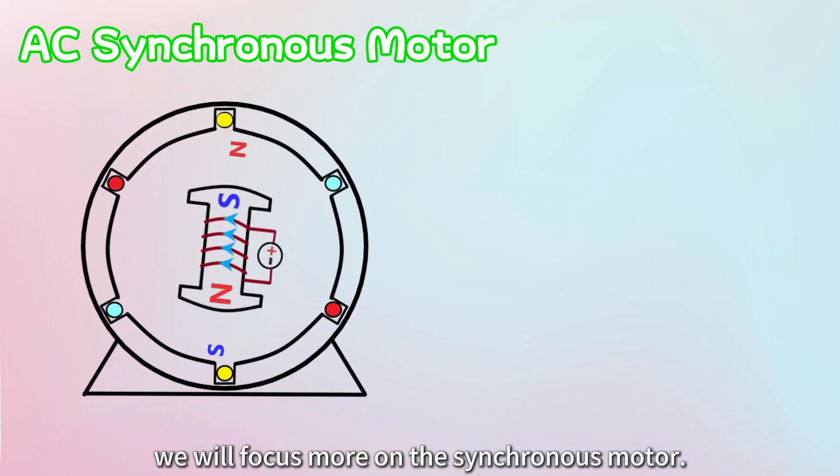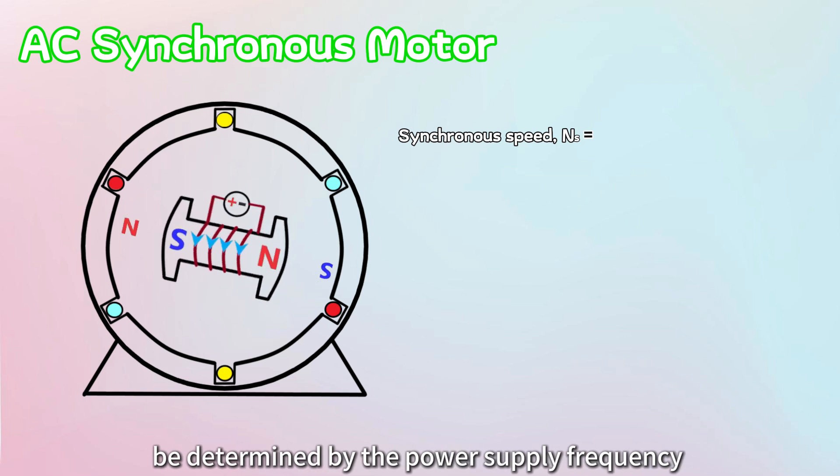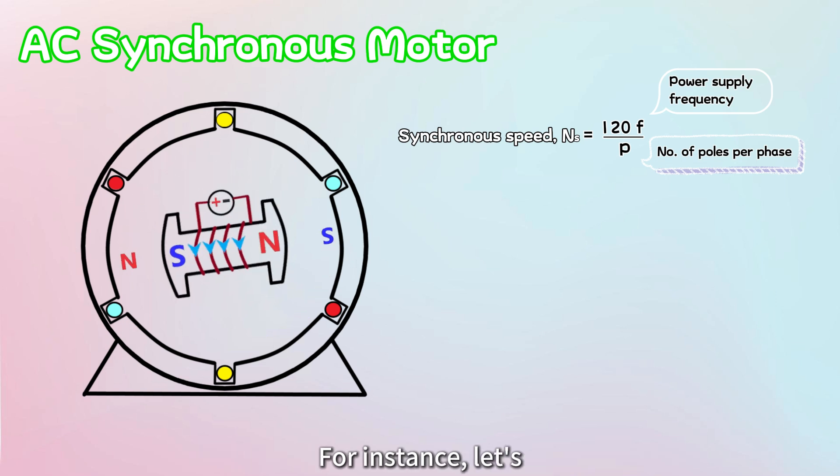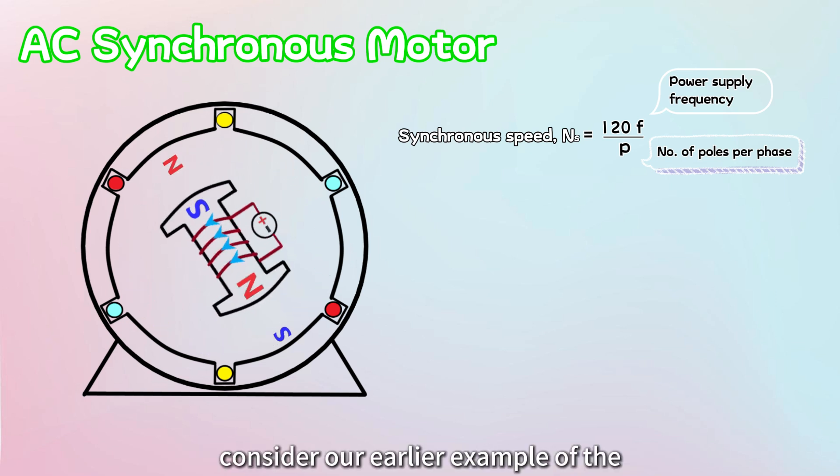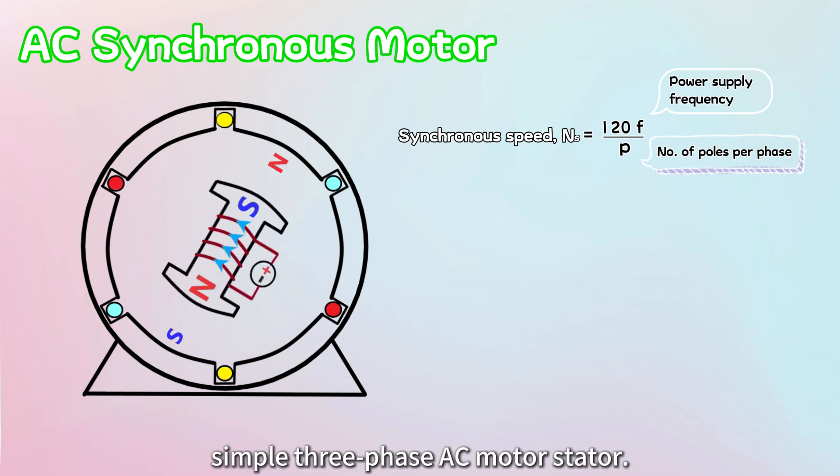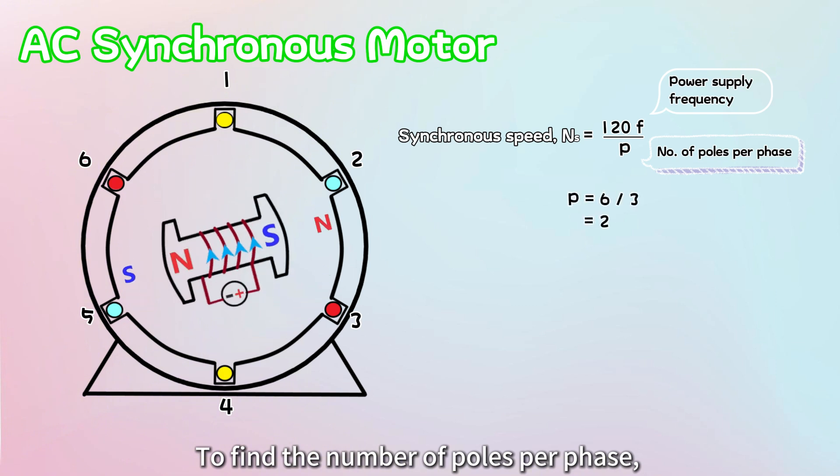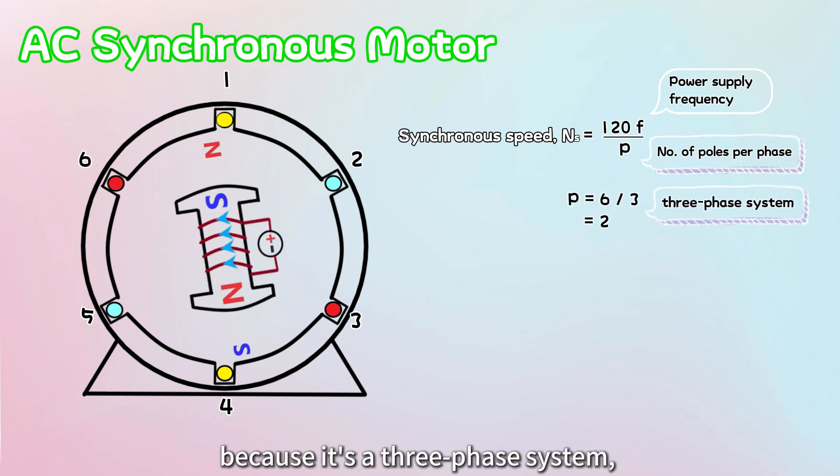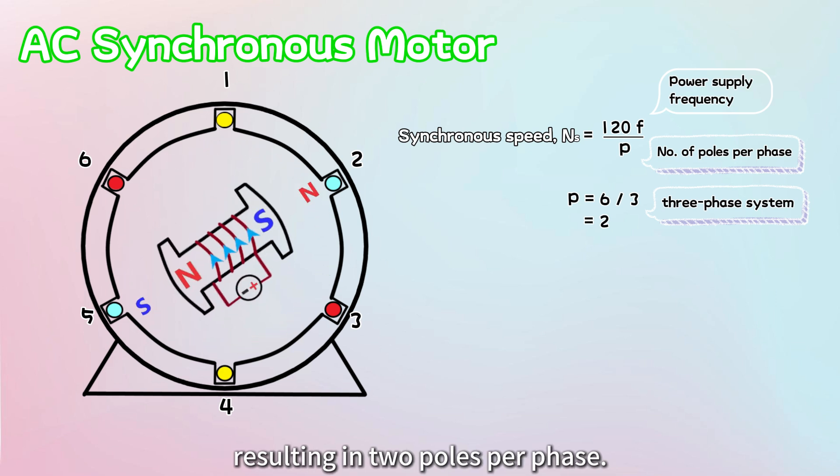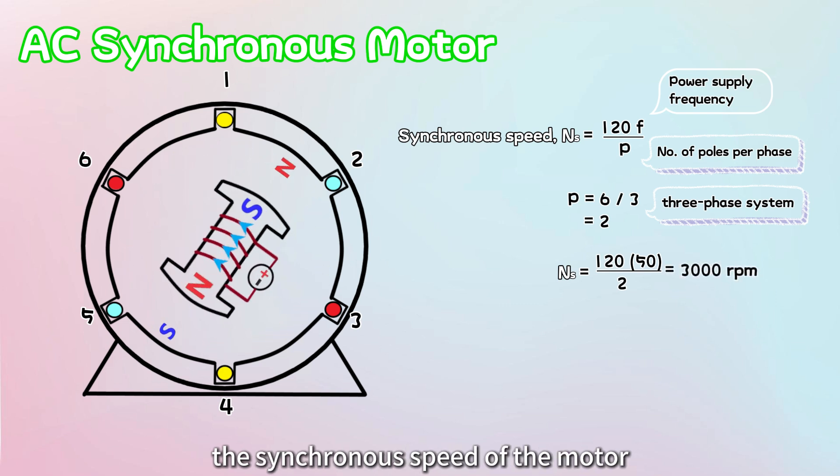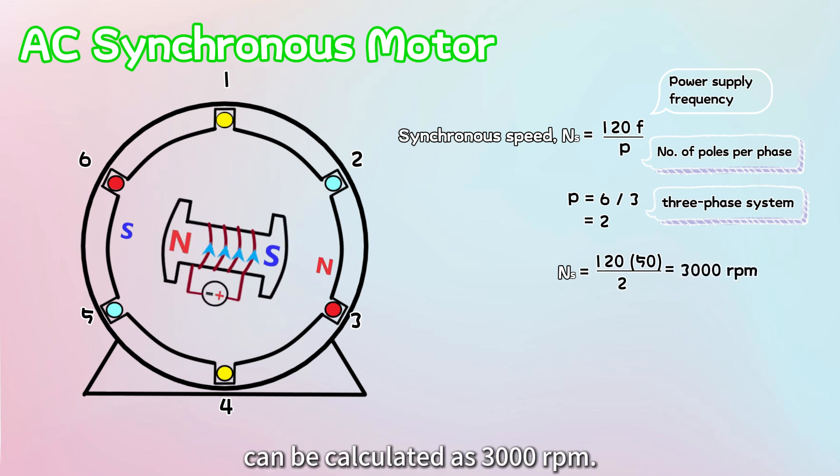In this video, we will focus more on the synchronous motor. The synchronous speed of an AC motor can be determined by the power supply frequency and the number of poles per phase in the stator. For instance, let's consider our earlier example of the simple three-phase AC motor stator. In the diagram, we can identify a total of six poles. To find the number of poles per phase, we divide the total number of poles by three because it's a three-phase system, resulting in two poles per phase. If the power supply frequency is 50 hertz, the synchronous speed of the motor can be calculated as 3,000 RPM.